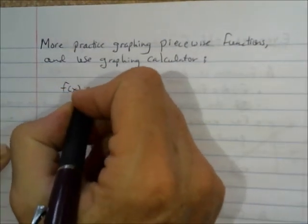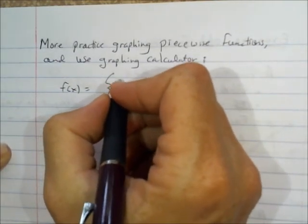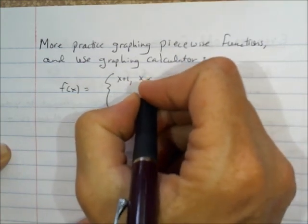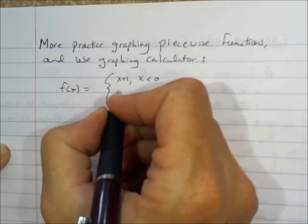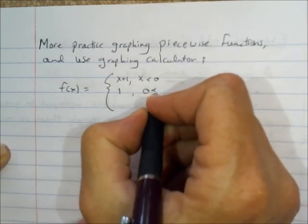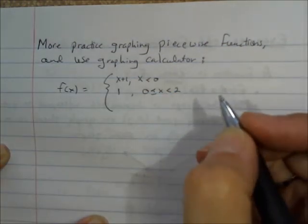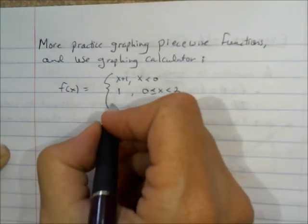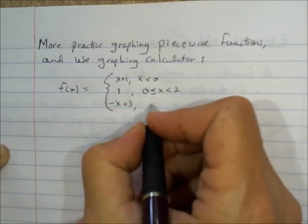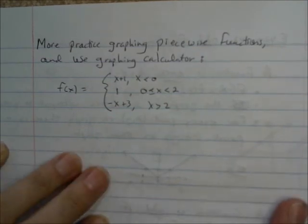So the piecewise function that I'm going to do right now is f of x is equal to x plus 1, and that is when the x values are less than 0. f of x is equal to 1, and that is when 0 is less than or equal to x, which is less than 2. And then f of x is equal to negative x plus 3, and that's when x is greater than 2. So we've got three pieces to this piecewise function.